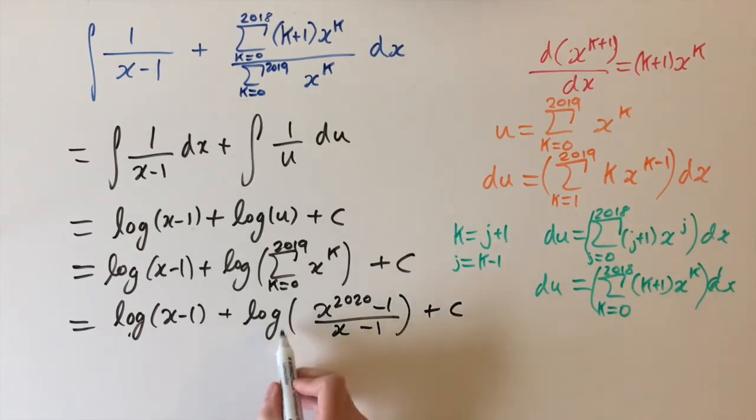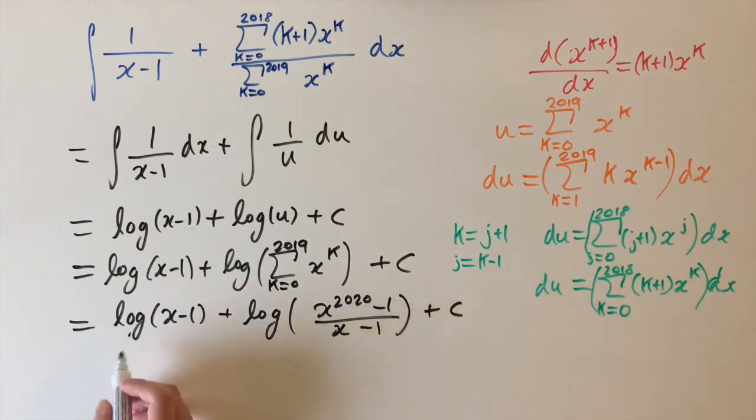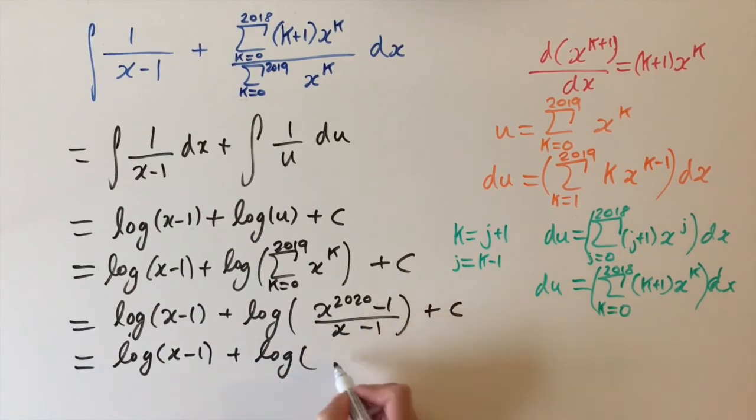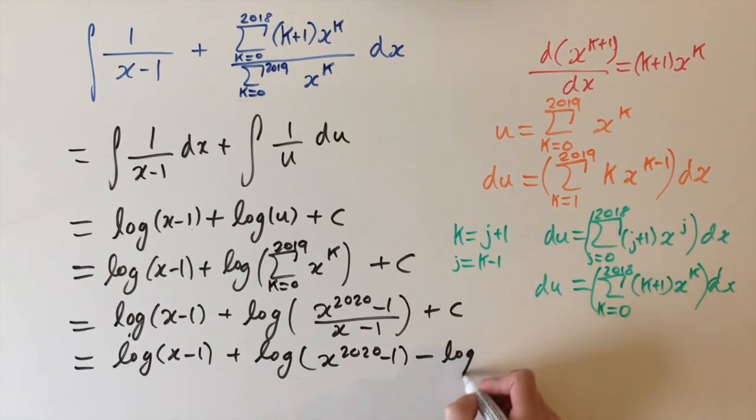So the reason this is really nice is we can use the law of division or subtraction for logs. We have a log of a ratio. And that's the same as the difference of two logs. And then we see that the denominator is actually the same as our first term. So this is going to cancel. And we'll have log of x minus 1 plus log of just the top term, the numerator,